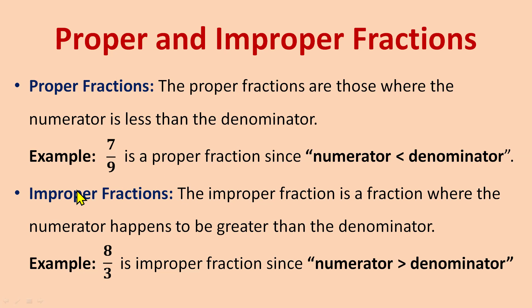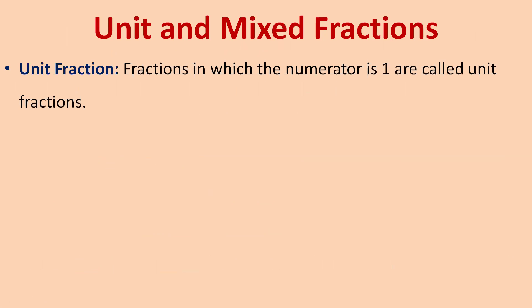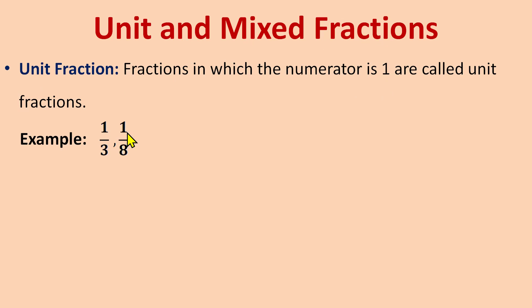Next are unit fractions. A unit fraction is a fraction where the numerator is one. We only look at the numerator — if it is 1, it's a unit fraction. For example: 1/3, 1/8, 1/2, 1/43 — whatever the denominator, if the numerator is 1, it is a unit fraction. Unit means one.